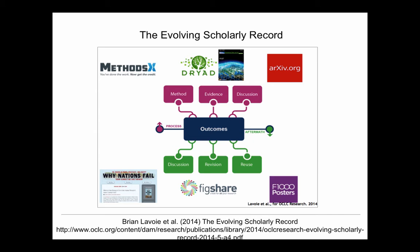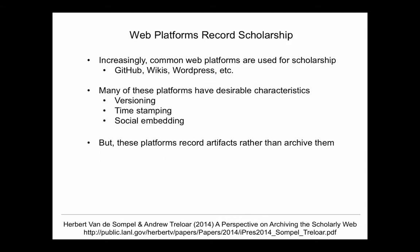OCLC was considering what is really the scholarly record, how you delineate it, and they came from the perspective of archiving this new scholarly record and whose task it actually is to archive all those new types of materials. I did a paper for iPress with Andrew Treelor at the Australian National Data Service, where we consider that a lot of common web platforms are used for scholarship like GitHub, Wikis, and WordPress. Researchers use these because they have attractive features like versioning, timestamping, and social embedding. But we say in this paper: be careful, these platforms are actually recording scholarship — they are not archiving it.